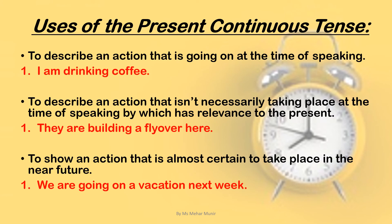Uses of present continuous tense. First, when describing an action that is going on at the time of speaking — for example: I am drinking coffee. Second, to describe an action not necessarily taking place right now but which has relevance to the present — for example: They are building a flyover here. Third, to show an action almost certain to take place in the near future — for example: We are going on a vacation next week.